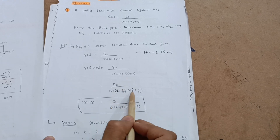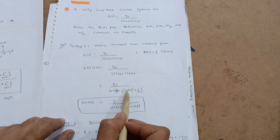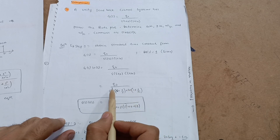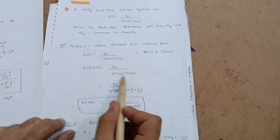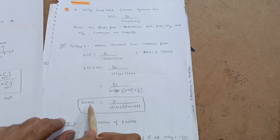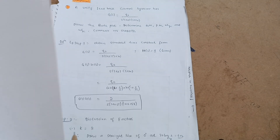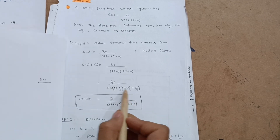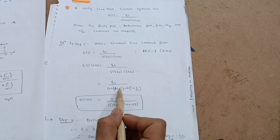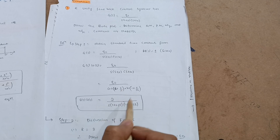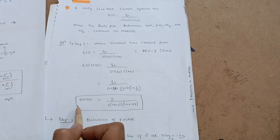So G(s)·H(s) = 80 / [s · 2(1 + 0.5s) · 20(1 + 0.05s)]. The denominator constant becomes 2 × 20 = 40, so 80/40 = 2. This gives G(s)·H(s) = 2 / [s · (1 + 0.5s) · (1 + 0.05s)]. Here T = 0.5 gives 1/2 = 0.5, and T = 0.05 gives 1/20 = 0.05. This is the standard time constant form.